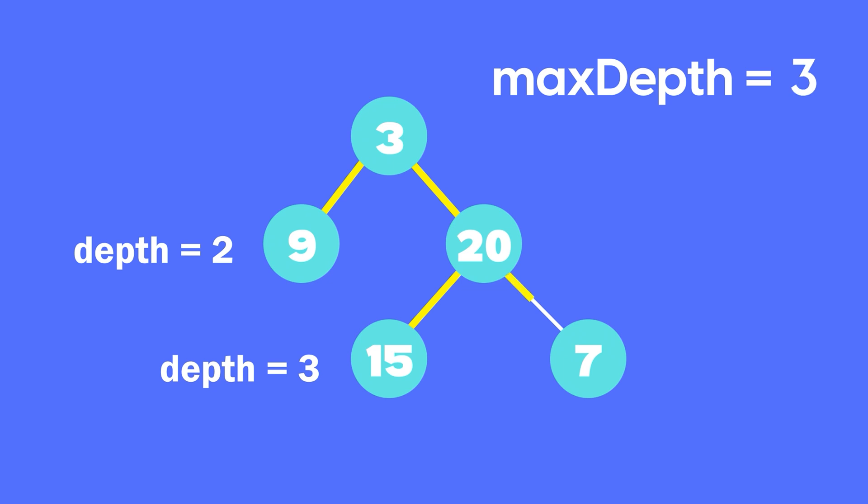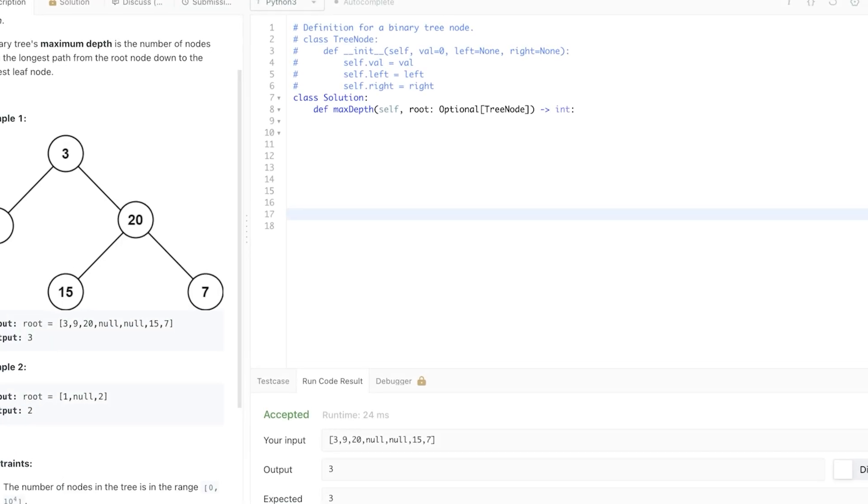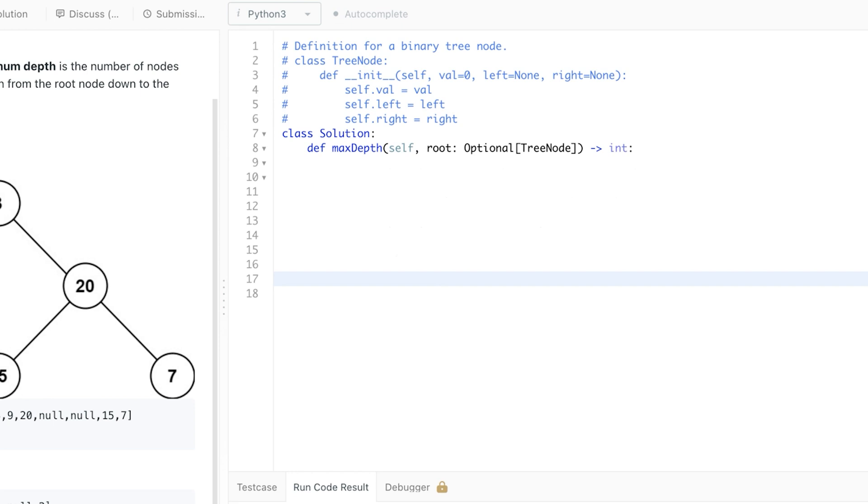After that, we reach this last leaf node at 7. And the depth here is 3 which is not more than the current max depth of 3. So we don't update the max depth in this case. At the end, we have 3 as our final answer. If you have understood the algorithm, coding it up is very easy.